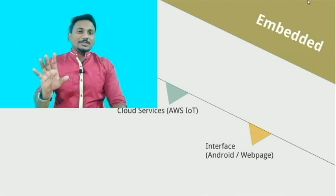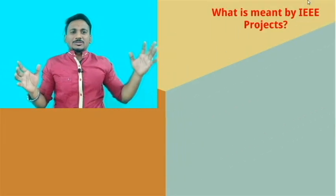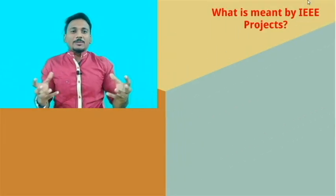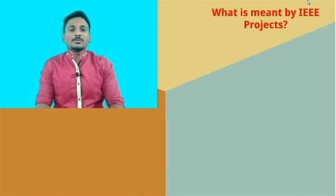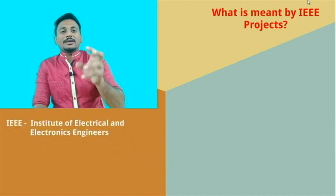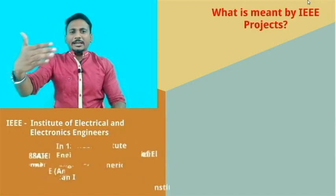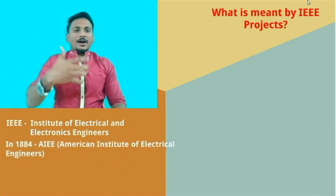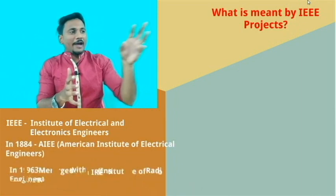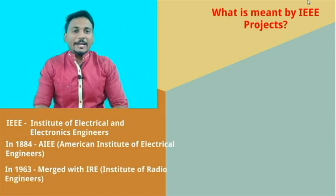Your final question: what is meant by an IEEE project? PG and engineering students are being pushed towards IEEE projects. IEEE stands for Institute of Electrical and Electronics Engineers. It first started in 1884 as AIEE, and in 1963 IRE merged into it to form the concept of IEEE.